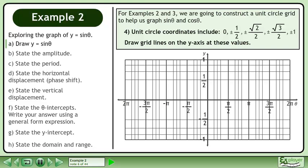Unit circle coordinates include 0, positive or negative 1 half, positive or negative root 2 over 2, positive or negative root 3 over 2, and positive or negative 1. Draw grid lines on the y-axis at these values.